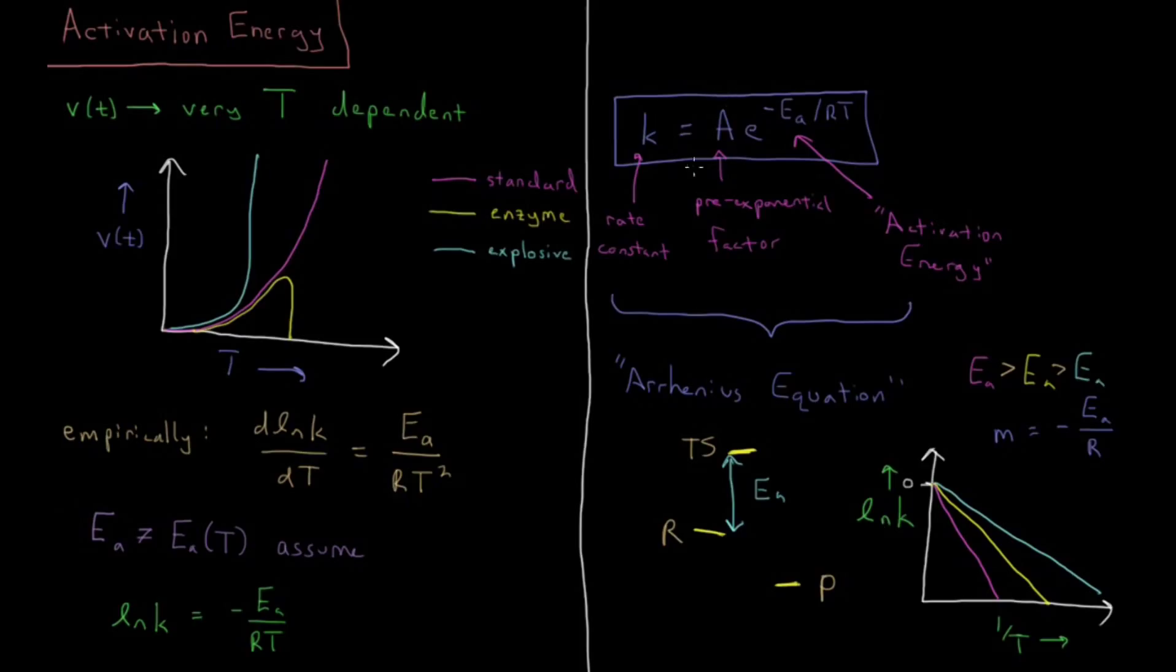So this is our Arrhenius equation, which defines how our reaction rates depend on temperature. And that depends on a quantity called the activation energy, which we can get at by plotting the logarithm of the rate constant versus the inverse of the temperature.